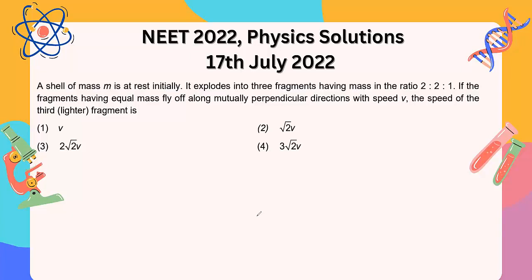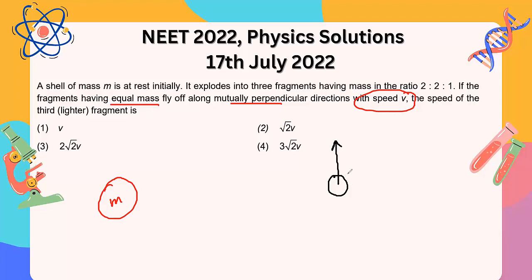This question says a shell of mass m is at rest initially, then explodes into three fragments with a mass ratio of two to one. The fragments with equal mass fly off along mutually perpendicular directions with speed v. You have to find the speed of the lighter fragment. The mass of this shell is m; it splits so that two fragments each have mass 2m/5 and they go in perpendicular directions, each with velocity v.